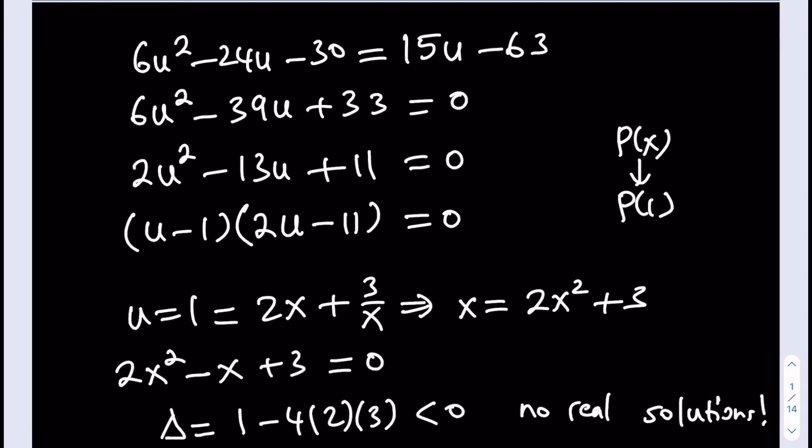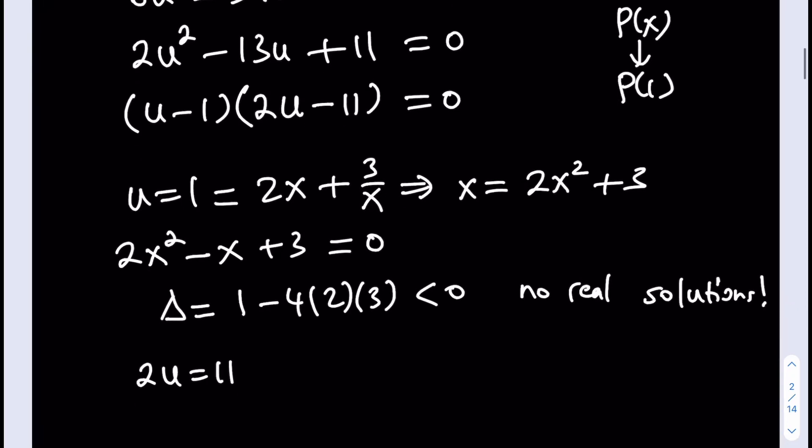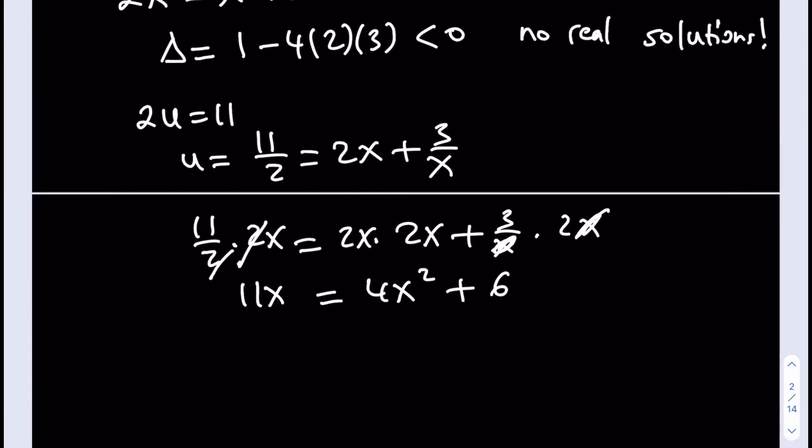But the other equation is going to give you real solutions. So, let's go ahead and check that one. 2u is equal to 11. This is going to give you u is equal to 11 halves. And as you know, u is 2x plus 3 over x. That was our substitution formula. Now, let's go ahead and multiply everything by... I think at this point you want to get rid of the fraction. So, I want to multiply everything by 2x. Let me go ahead and do this. Show my work. You know how teachers say, show your work. I'll multiply everything by 2x. And then something nice is going to happen. The world is going to be a better place. 11x equals 4x squared.